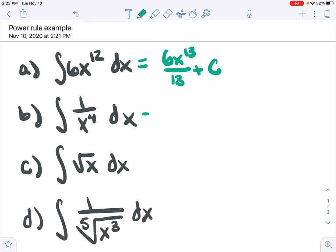The next one, we want to write this as x to the minus 4, and then we can use the power rule. So negative 4 plus 1 is negative 3.